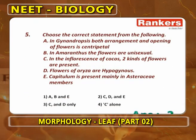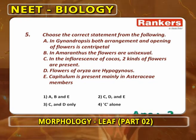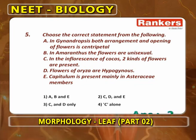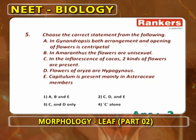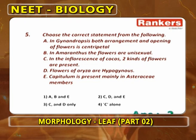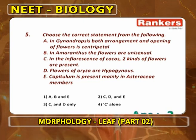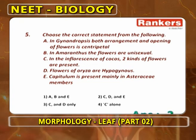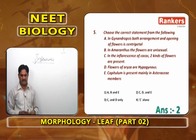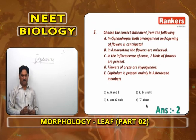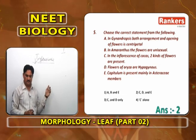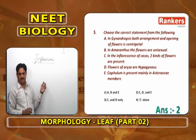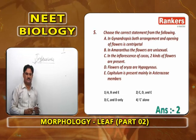Next: choose the correct statement. In Gynandropsis, both arrangement and opening of flowers is centripetal — wrong; only the opening is centripetal, the arrangement is acropetal. In Amaranthus, flowers are unisexual — wrong; in Amaranthus and Achyranthes the inflorescence is a simple spike and flowers are bisexual. The correct answers are C, D, and E: inflorescence of Cocos has two kinds of flowers; flowers of Oryza are hypogynous; capitulum is found mainly in Asteraceae members.